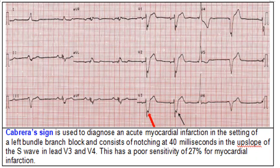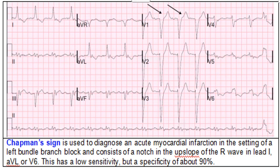Another sign is the Cabrera sign, used to diagnose acute MI in the setting of LBBB: there is a notch at 40 milliseconds in the upslope of the S wave in V3 and V4. Sensitivity is only 27%. Another sign is the Chapman sign: a notch in the upslope of the R wave in leads I, aVL, or V6. That also has low sensitivity but specificity of about 90%. These are additional ECG signs of MI in the setting of LBBB.